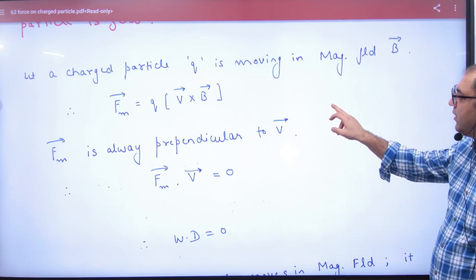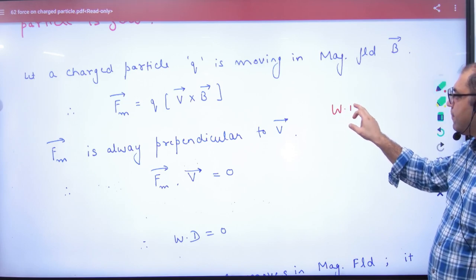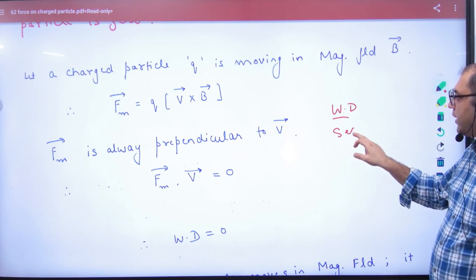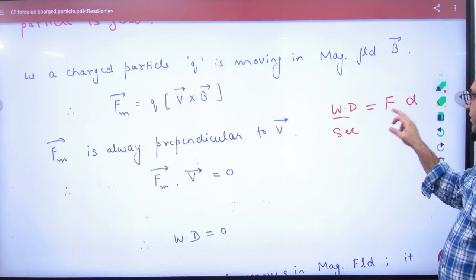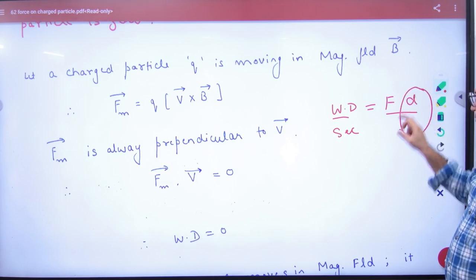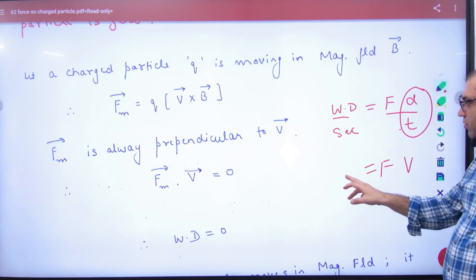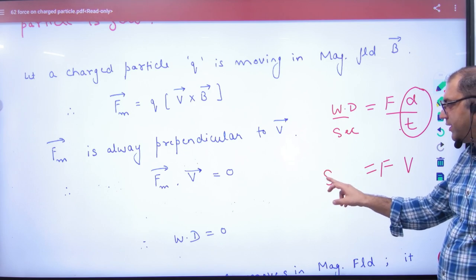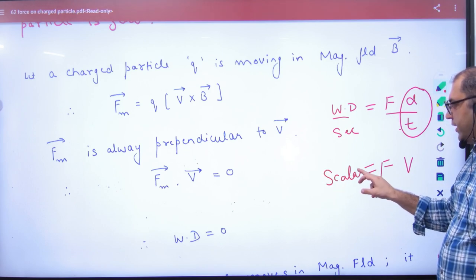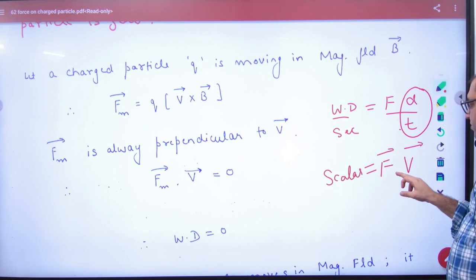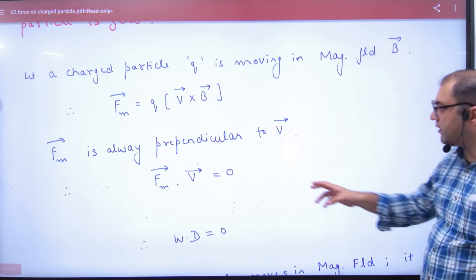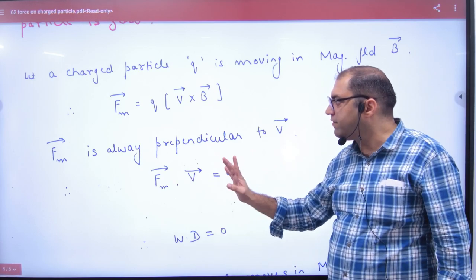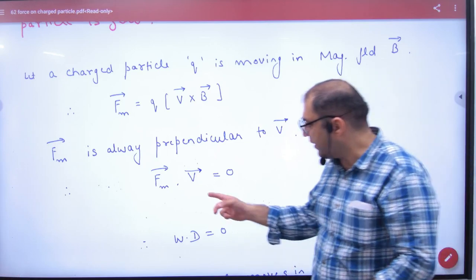We know that work done per second is power. Work done equals force into displacement divided by time. Displacement divided by time is velocity. So work done per second — which is a scalar quantity — equals F vector dot V vector. The dot product comes in because the result must be scalar. So F vector dot V vector means work done per second.